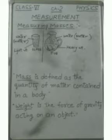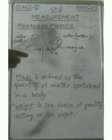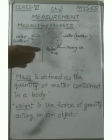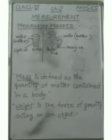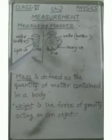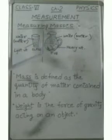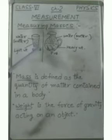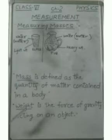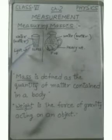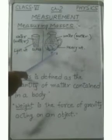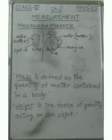Children, we are continuing our chapter 2 in measurement and our topic is measuring masses. So what is mass? Students, if we have a glass and a jug both full of water, which one will be heavier? Of course, a glass of water feels lighter than a jug of water. Why is it so? It is because the quantity of water in the glass is less than the quantity of water contained in the jug. Hence, mass is defined as the quantity of matter contained in a body.